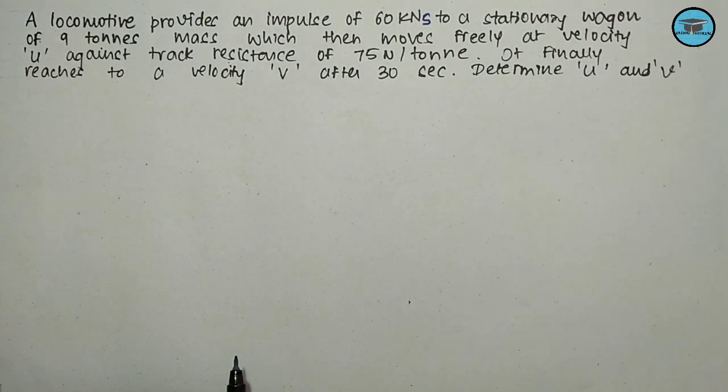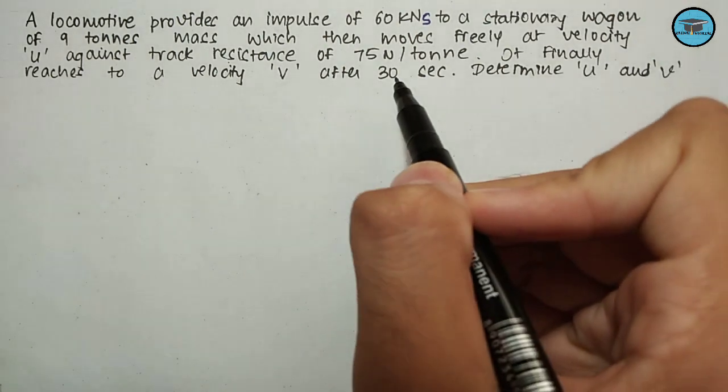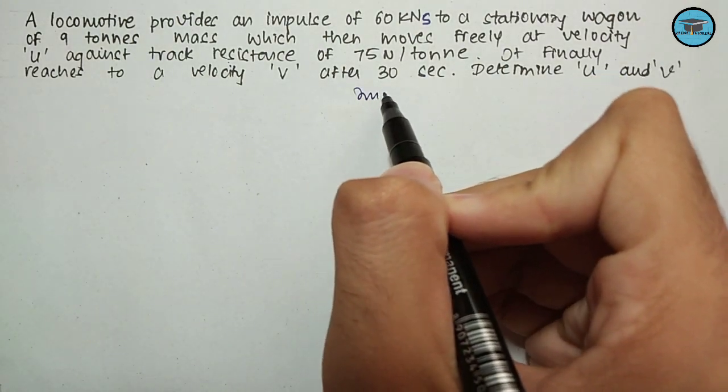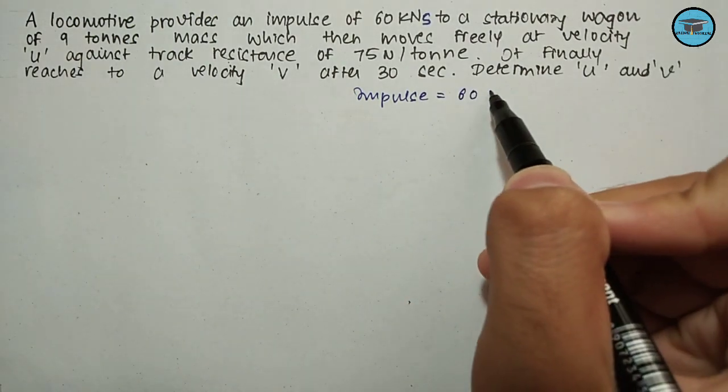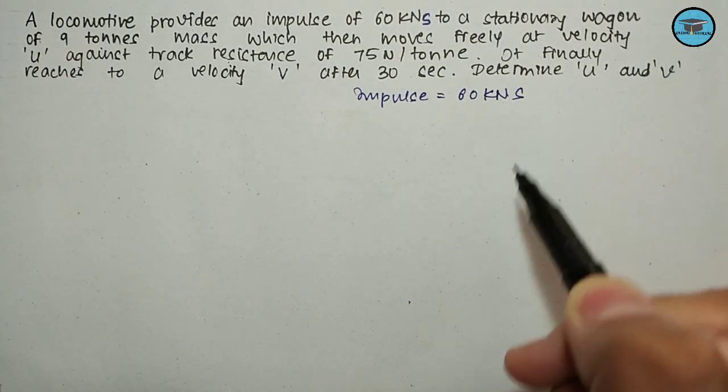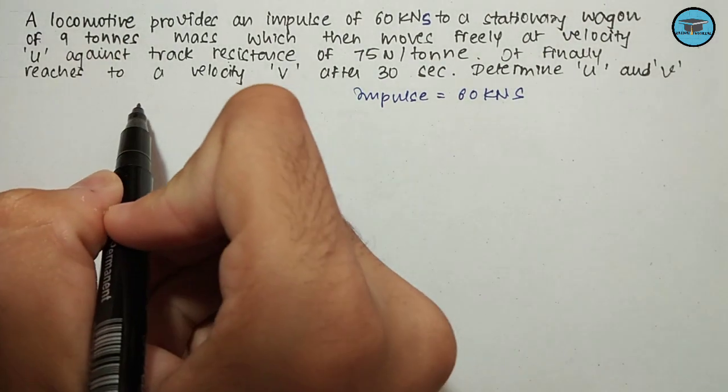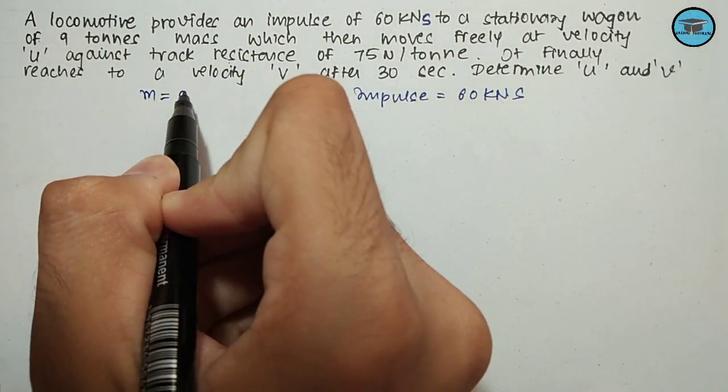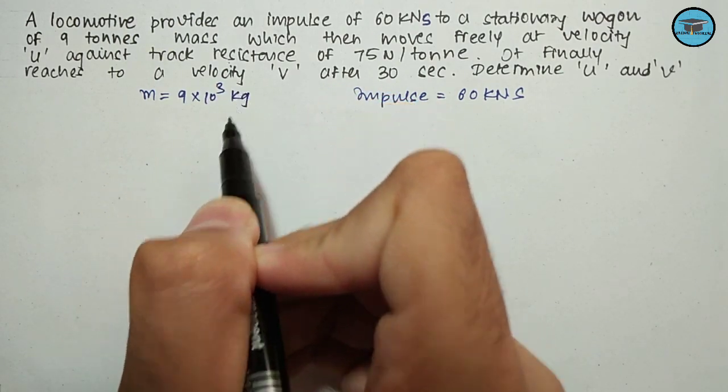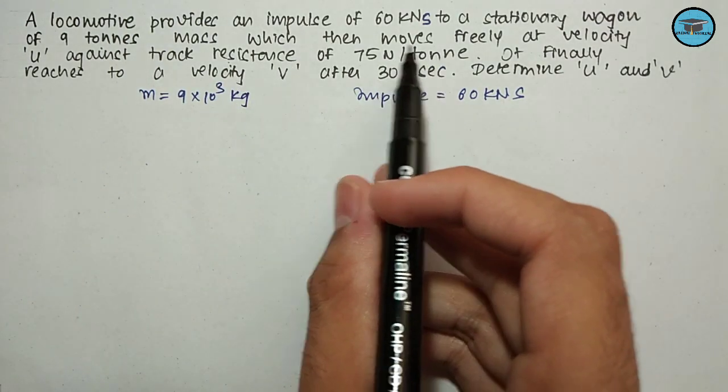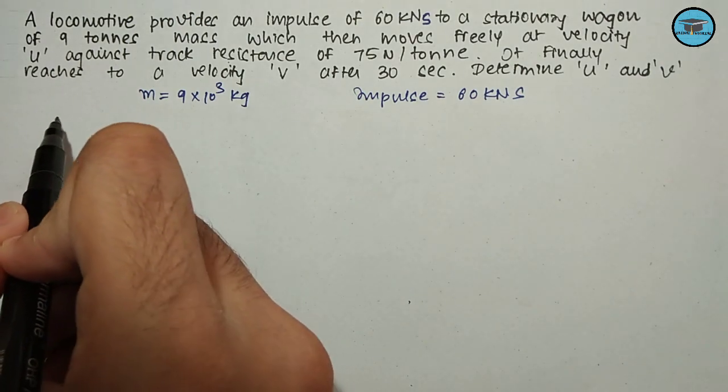Let us note down the data which has been provided here. Impulse is given as 60 kilonewton-second. The mass of the stationary wagon is given as 9 tons, that is 9 × 10³ kilograms. The track resistance per ton is 75 Newton, so track resistance.